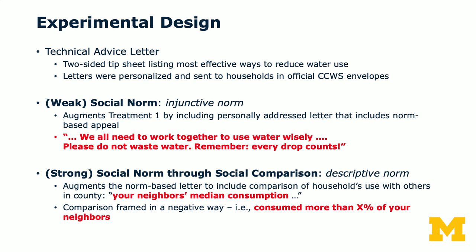Here are the different experimental conditions. There is a technical advice letter — a two-sided tip sheet listing the most effective ways to reduce water use. The letters were personalized and sent to households in official CCWS envelopes. Then there are two norms conditions. One is called the social norm, also called the injunctive norm in the norms literature — basically what you should do. The authors label this the weak norm treatment. It augments the technical advice letter by including personally addressed letters with a norm-based appeal, saying specifically: 'We all need to work together to use water wisely. Please do not waste water. Remember, every drop counts.' In other words, it's an exhortation of what you should do.